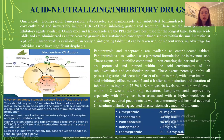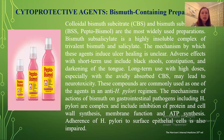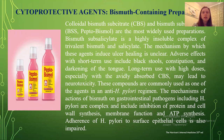You may see examples with doses of each PPI. Regarding bismuth-containing preparations: colloidal bismuth subcitrate and bismuth subsalicylate are the most widely used preparations. Bismuth subsalicylate is a highly insoluble complex of trivalent bismuth and salicylate. The mechanism by which these agents induce ulcer healing is not entirely clear. Adverse effects with short-term use include black stools, constipation, and darkening of the tongue. Long-term use with higher doses may lead to neurotoxicity.